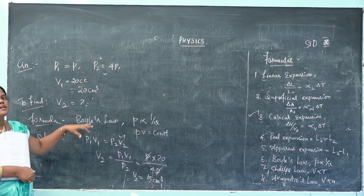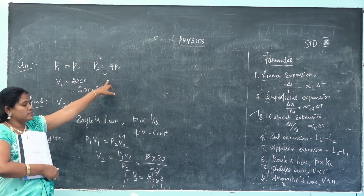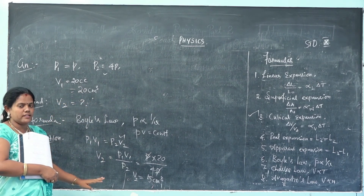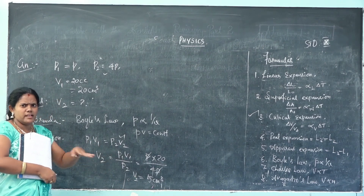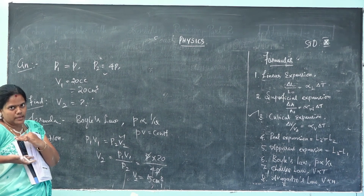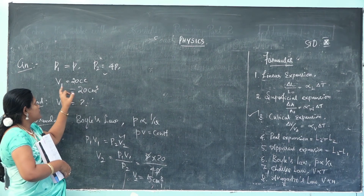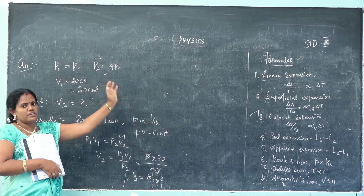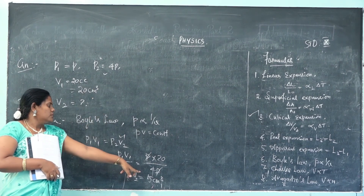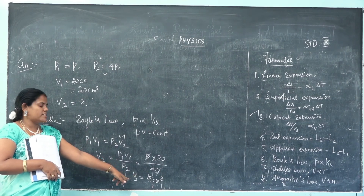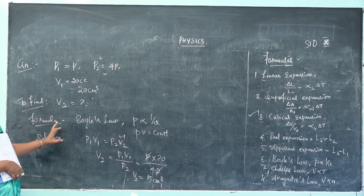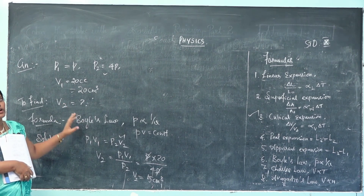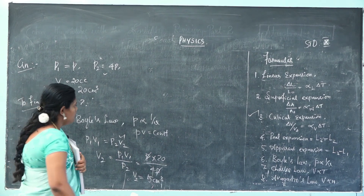So the volume changes from 20 cc to 5 cc. Because the pressure increases four times, the volume decreases four times — from 20 to 5 cubic centimeters. Please write down all the problems in your notes, as well as all the formulas in this lesson. Make sure you are thorough with the formulas and work out all the problems.